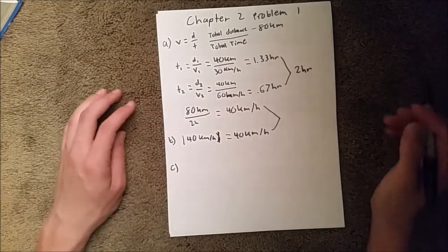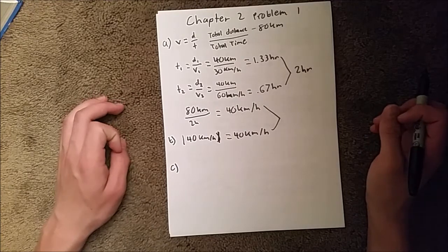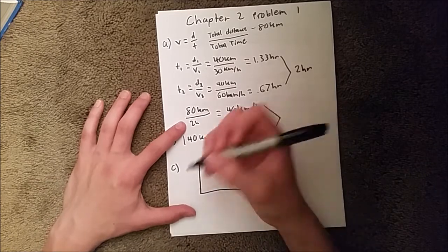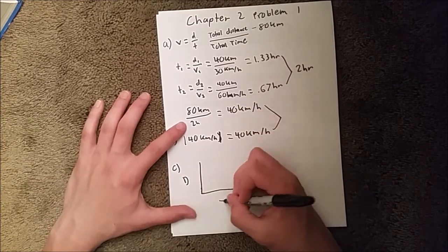And for Part C, it wants to know if we were to graph X versus T, so, X being distance, so we'll put a D here for distance and T here for time,